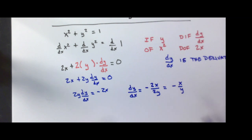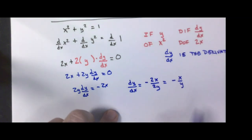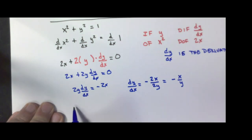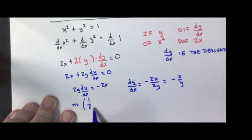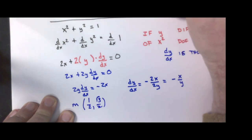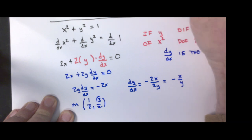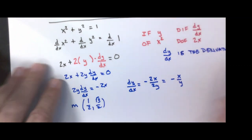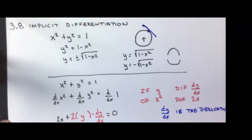What we have is an equation for the derivative in terms of both x and y. There are times I can use this directly. For example, the textbook wants us to find the slope of the circle at the point (1/2, square root of 3 over 2) — that's 60 degrees. They want to know what the slope of the tangent line of that circle is at that point.